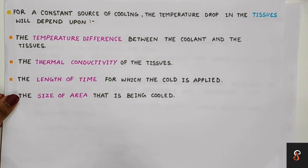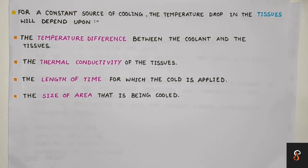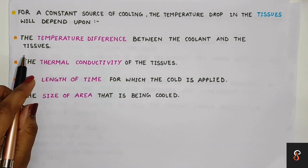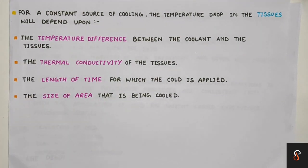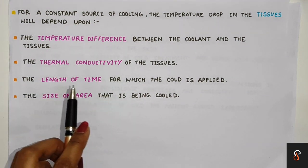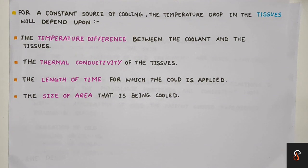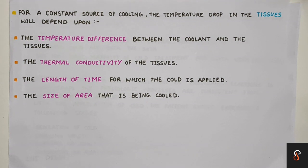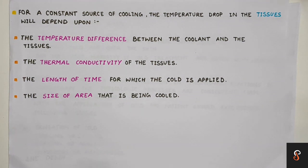When the cooling source is constant, temperature drops in the tissue depend upon four things. First, the temperature difference between the coolant and tissue — the lower the temperature applied, the greater the heat loss from the tissue. Second, the thermal conductivity of tissue, which differs from one area to another; water-filled tissues like muscles have high thermal conductivity compared to fat or skin. Third, the time duration for which cold is applied — energy loss fully depends on the length of exposure. Fourth, the size of the area being cooled — the smaller the area, the greater the heat loss.